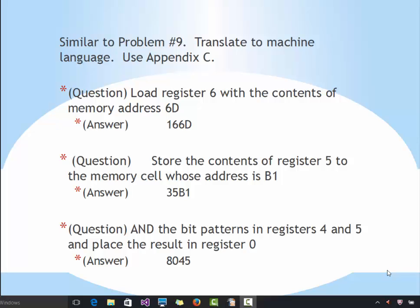The last problem is similar to problem number 9 — we go backwards and translate to machine language. The first one says load register 6 with the contents of memory address 6D. Looking at Appendix C, load is opcode 1 or 2. Since we are loading from a memory address, the opcode is 1. So the instruction is 166D. If it said load register 6 with the bit pattern 6D directly, then you would have 266D because 2 is the opcode for loading a bit pattern directly. The next one says store the contents of register 5 to memory cell B1 — store is opcode 3, giving 35B1.